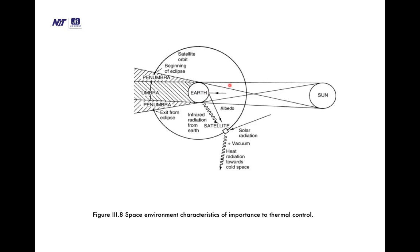The satellite can be seen to get very hot when exposed to sunlight and very cold when in shadow. The relevant factors are solar radiation, vacuum, heat radiation toward cold space, infrared radiation from Earth, eclipse entry and exit, umbra, and penumbra. The satellite is thus under very different environmental conditions as it passes around Earth.